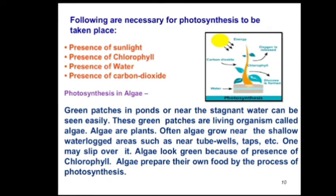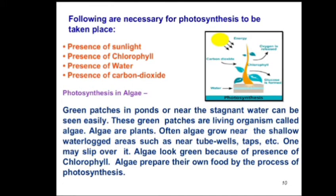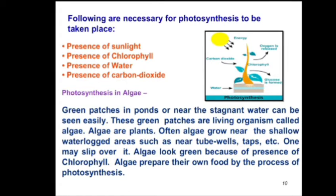Leaves are flattened to have a large surface area to obtain maximum sunlight. They are also very thin to allow sunlight to reach all cells of the leaf so that no cell is left untouched by sunlight. Leaves have large air spaces between cells to allow carbon dioxide to enter properly, and they have stomata through which carbon dioxide enters and is absorbed.